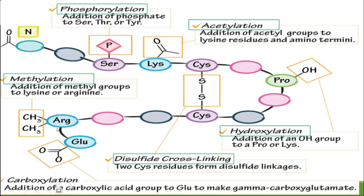Moving forward, we can see arginine is attached with methyl groups — that is called methylation. Note that methylation can be di- or trimethylation depending on whether two or three methyl groups are attached to that amino acid. At the last amino acid, glutamine is attached with a carboxyl group, and the process of modification is called carboxylation.